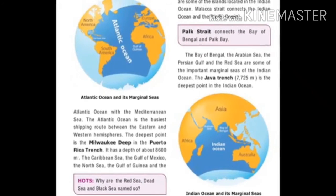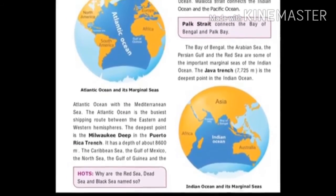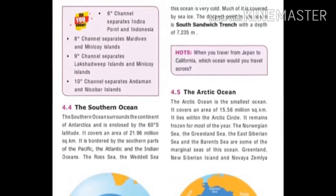The Java Trench is the deepest point in the Indian Ocean at 7,725 meters. The 10 Degree Channel separates the Andaman and Nicobar Islands. The 6 Degree Channel separates Indira Point and Indonesia. The 8 Degree Channel separates the Maldives and Minicoy Islands. The 9 Degree Channel separates the Lakshadweep Islands and Minicoy Islands.